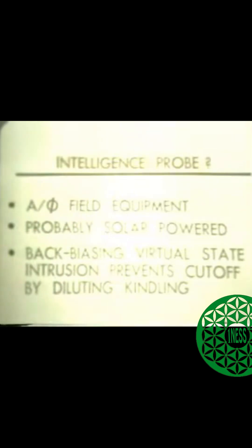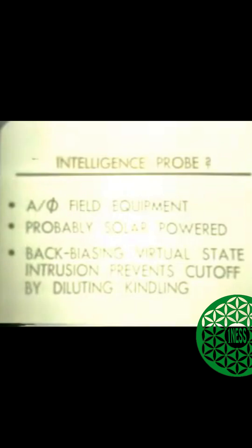If you will check Feynman's three volumes of physics — check the second volume — you will find that an experiment was done to see whether or not the A field was a mathematical figment or whether or not it was a real fundamental field of nature.